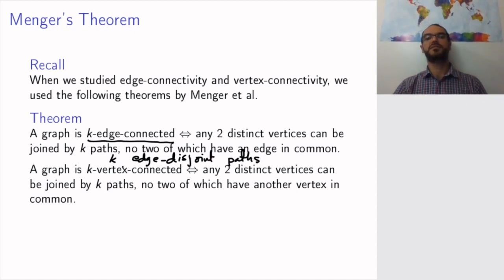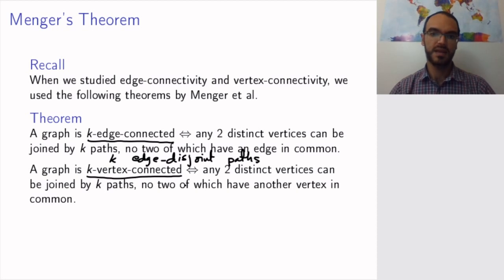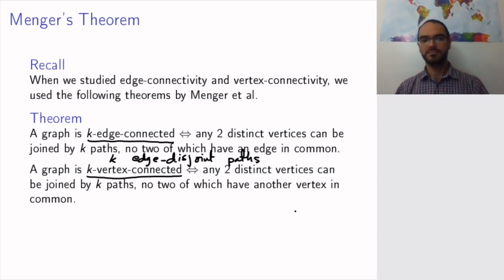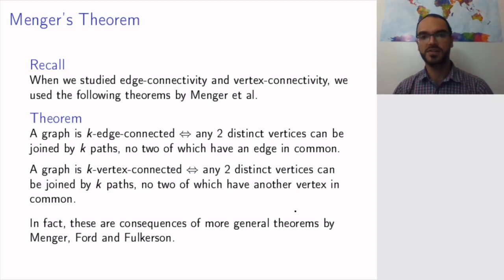There was a similar theorem for vertex connectivity. A graph is k vertex connected — meaning the removal of less than k vertices would not disconnect the graph — if and only if any two distinct vertices can be joined by k paths, no two of which have another vertex in common. These theorems are consequences of more general theorems proved by Menger for vertices and Ford and Fulkerson for edges.